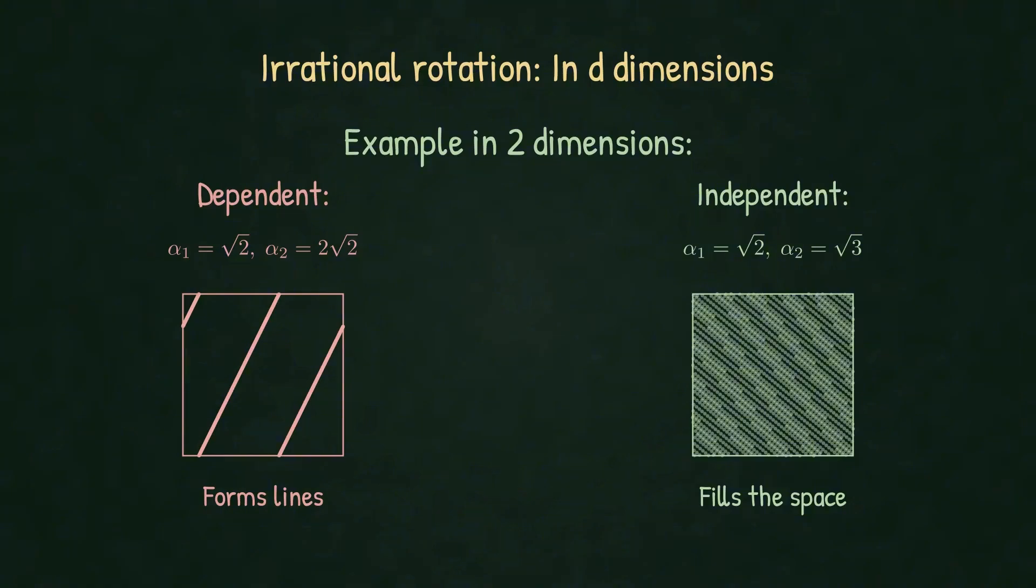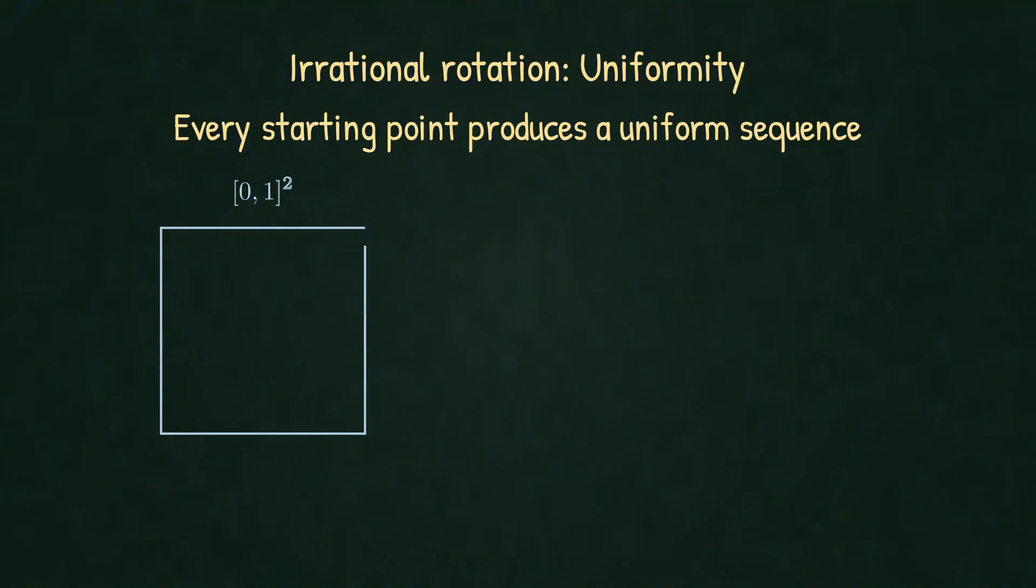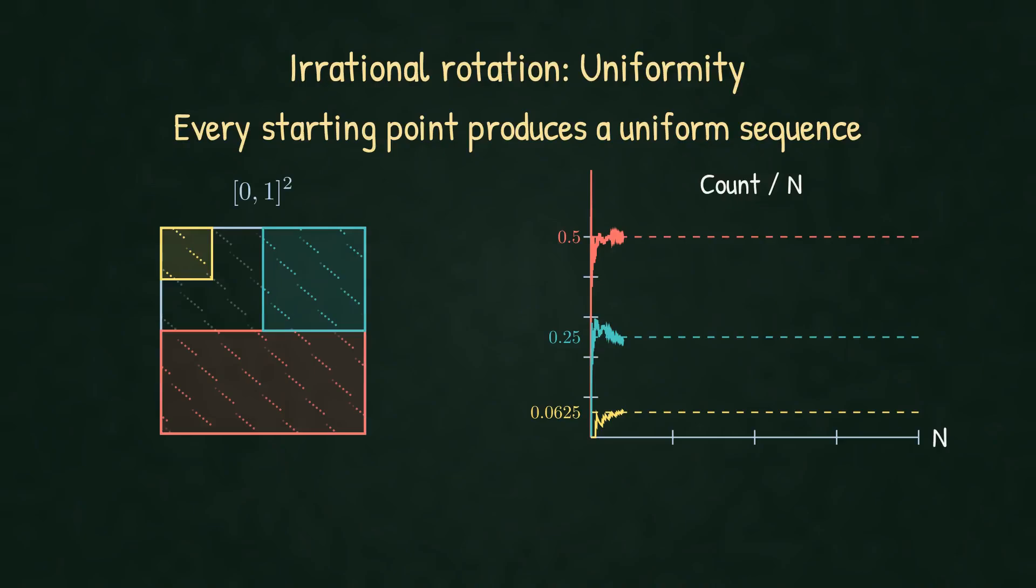Let's verify this generator actually works. First property: uniformity. We generate 2000 points using irrational rotation. Watch how they fill the square.